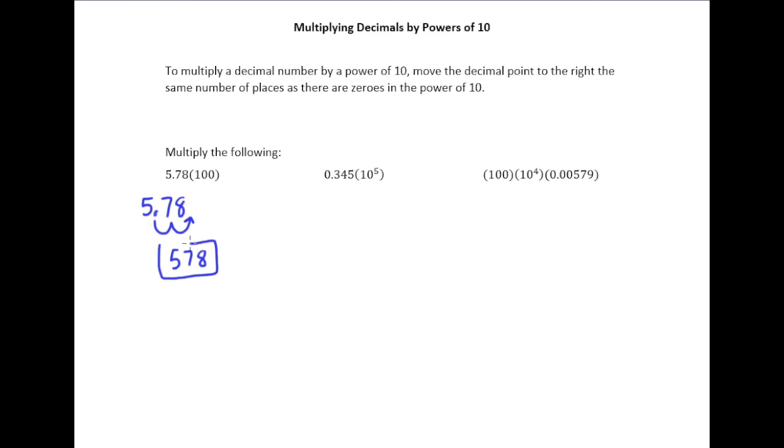Why does this rule make sense? Well, we already talked about back in chapter 1 what happens when I multiply something like 15 by a power of 10. Let's multiply 15 by 1,000.